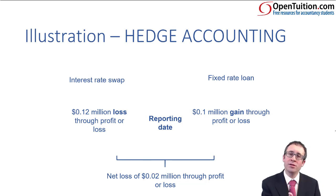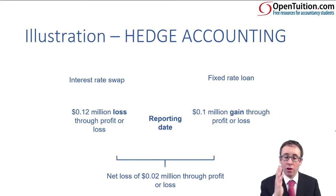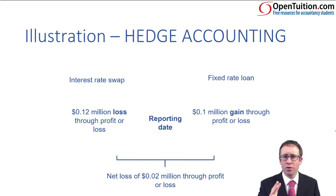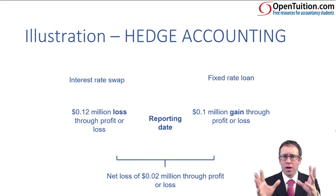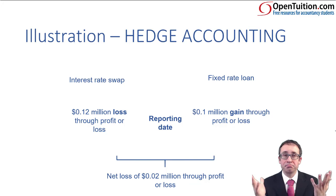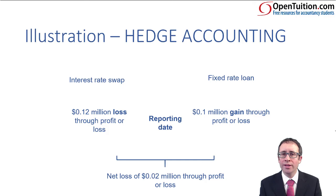The loss on the instrument has covered the gain on the item. There's no issue here about effectiveness and ineffective portions being taken to different financial statements — the gain and the loss both entirely go through profit or loss, and that's it in terms of a fair value hedge. Nothing to it. You need to remember the rules and then start applying your knowledge in any questions.